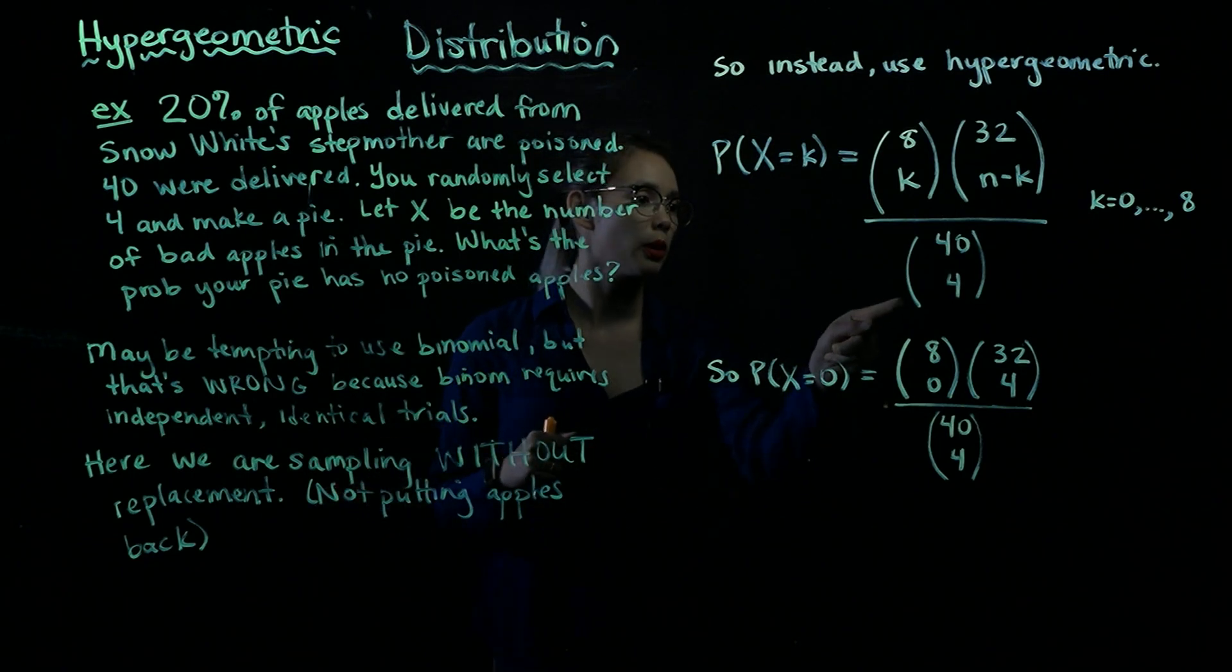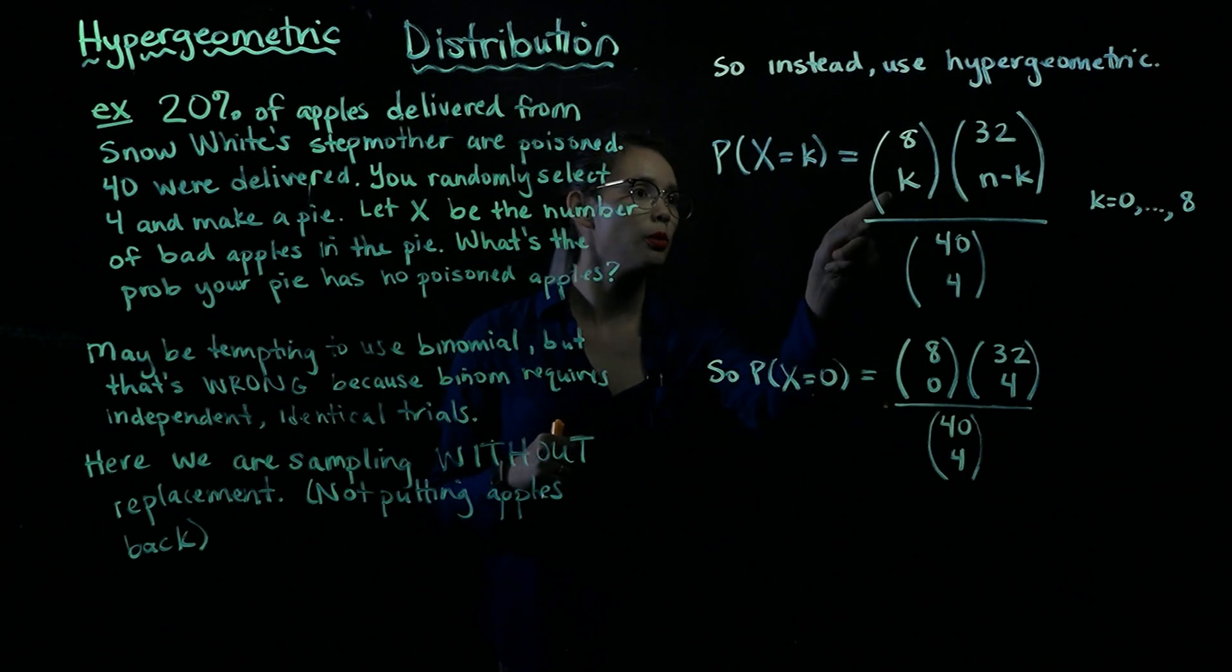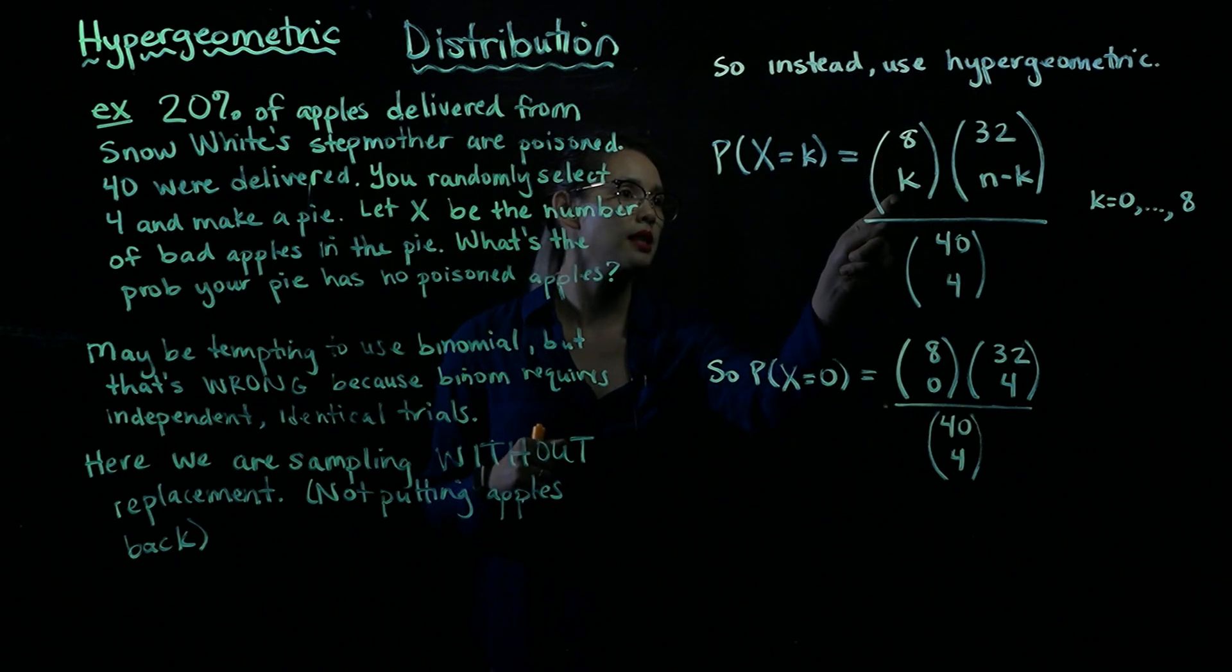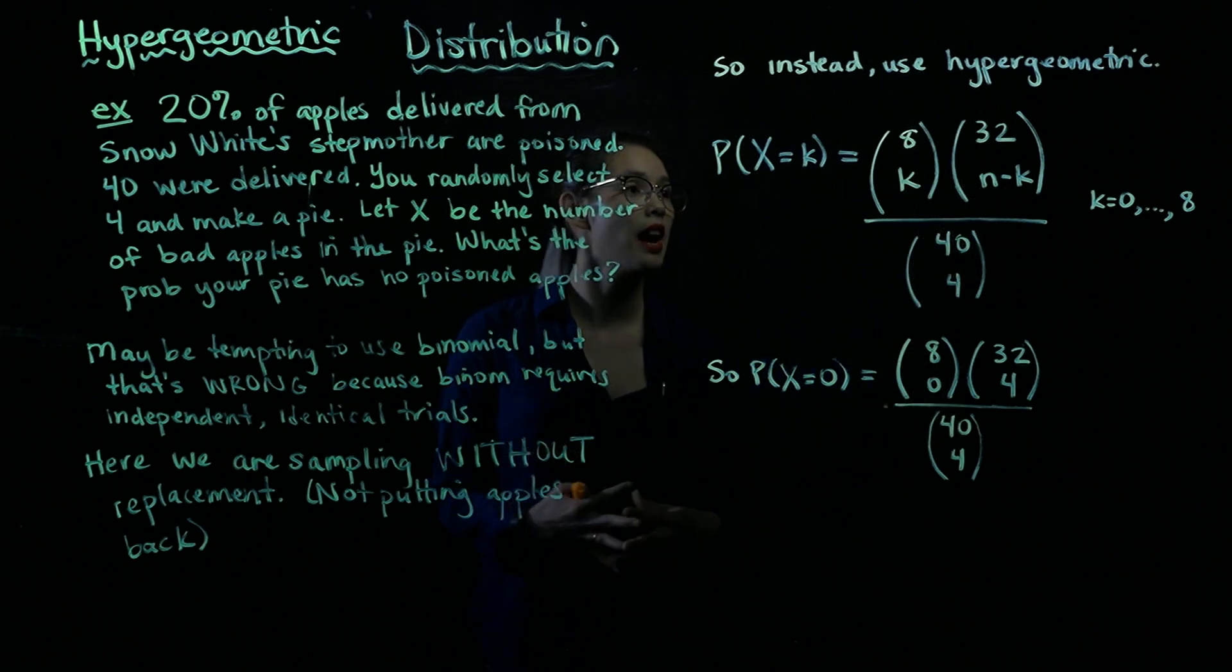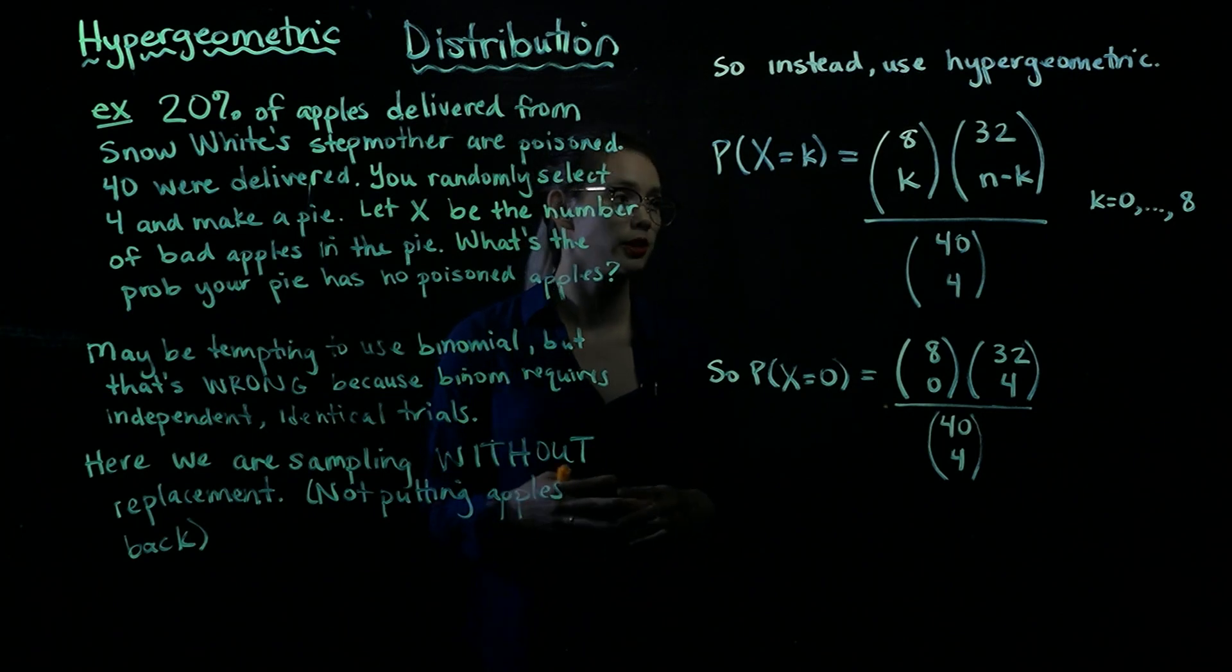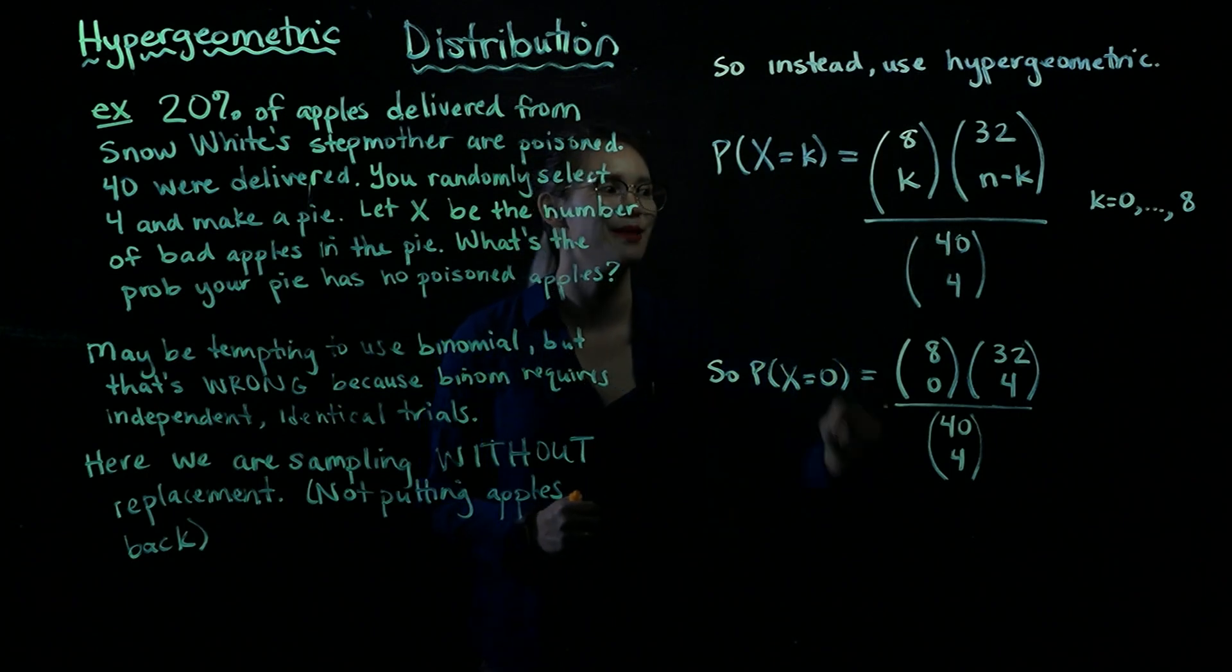So in the denominator, we have the total number of ways we can choose four apples out of 40. And then here we have the number of ways we could choose k poisoned apples out of the eight poisoned apples in this pile of apples that Snow White's stepmother has delivered. And then if we have k poisoned apples, that means we have n minus k apples that are not poisoned. And 32 of the apples in the delivery were not poisoned. So we have 8 choose k times 32 choose n minus k.